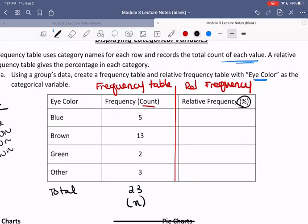Now to compute the relative frequency of each category, we want to compute the part of our total that is in each category. So for blue eye color, we see we have five people with blue eyes and there's a total of 23 people. So if we take this fraction and compute its decimal, we'll get 0.2174. And I encourage you to check that on your own calculator.